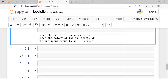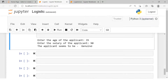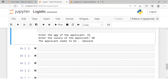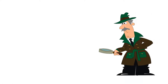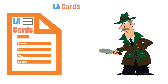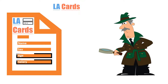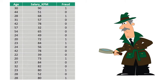Let me explain with the help of an example. This is a predictive model which, based on the applicant's age and salary, predicts whether the customer is genuine or a fraudster. Let's say you are a fraud analyst working in a credit card company called Alec Cards, where you receive applications for credit cards and have been assigned a task to develop a model based on two variables: age and salary.